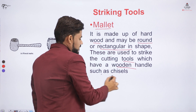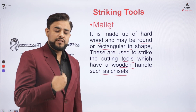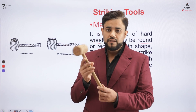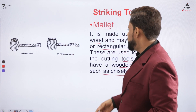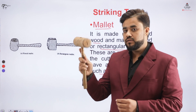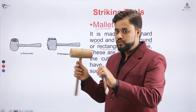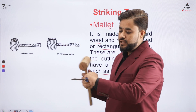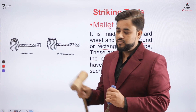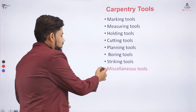The mallet is used to strike cutting tools that have a wooden handle, such as a chisel. For example, if we want shaving of the wood to take place using a chisel, we strike the chisel with a mallet. This is a round-shaped mallet used to strike the chisel. We place the cutting edge on the surface of wood and strike the handle of the chisel so that the cutting action takes place. The chisel and mallet always work together.